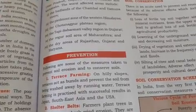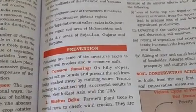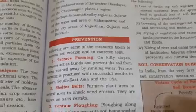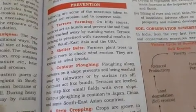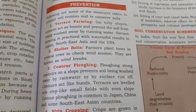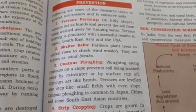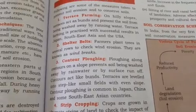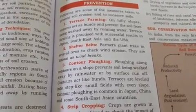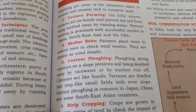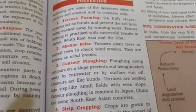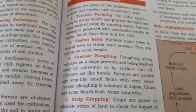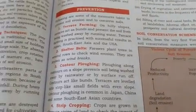Now let me explain prevention. Following are some of the measures taken to prevent soil erosion and to conserve soil, because soil is very important for us — the whole of life totally depends on soil, and because of that reason we have to preserve it. The first is terrace farming. On hilly slopes, terraces act as bunds and prevent the soil from being washed away by running water. Terrace farming is practiced successfully in Japan, Southeast Asia and the USA. Shelter belts: farmers plant trees in several rows to check wind erosion; they are known as windbreaks.